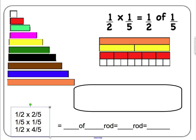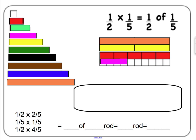Multiplication using Cuisenaire rods is done a similar way. If you have a multiplication problem, replace the times sign with the word 'of,' and then take a part of a rod. For example, one-half times one-fifth is the same as one-half of one-fifth. One-fifth is the red piece — half of the red piece is the white piece, which is one-tenth of the whole. One-half of two-fifths: two-fifths is the violet piece, and one-half of that is a red piece, which equals one-fifth of the whole. So one-half times two-fifths equals one-fifth.